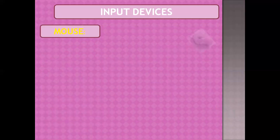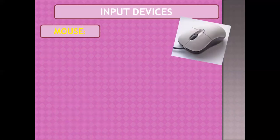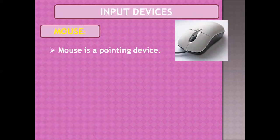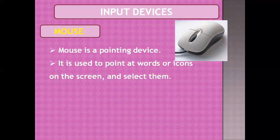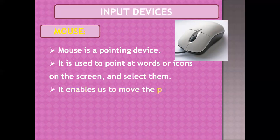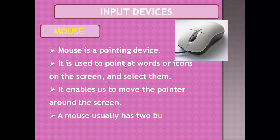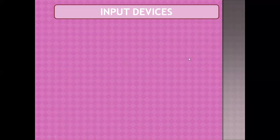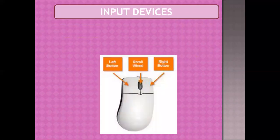Now, let's talk about the mouse. A mouse is a pointing device used to point at words or icons on the screen and select or open them. It enables us to move the pointer on the screen — as we move the mouse on our mouse pad, the pointer on the screen moves in the same way. A mouse usually has two buttons and a scroll wheel: the left button, the right button, and the scroll wheel.